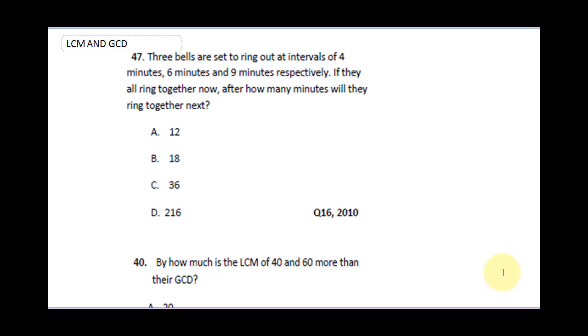Now the first question says three bells are set to ring out at intervals of 4 minutes, 6 minutes, and 9 minutes respectively. They all ring together now. After how many minutes will they ring together next? One thing you need to understand about this question is the time they are gonna ring together next is actually the LCM.